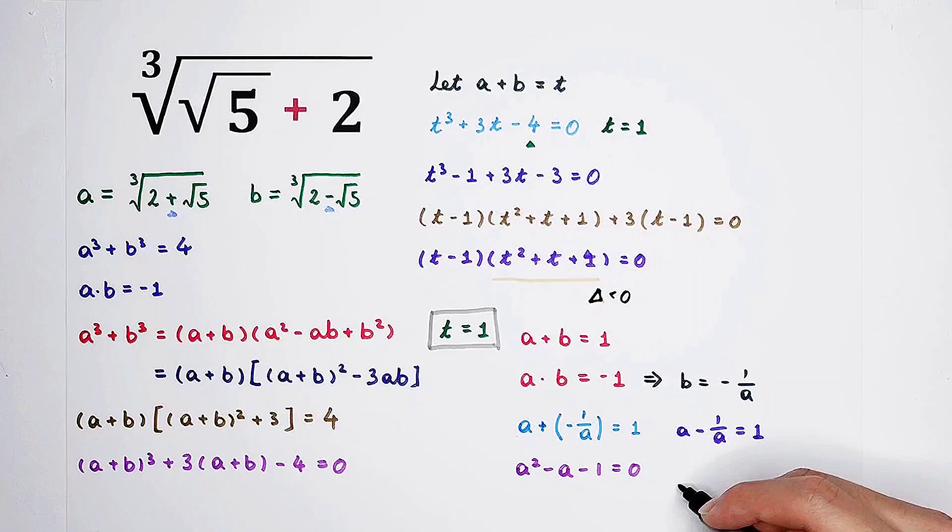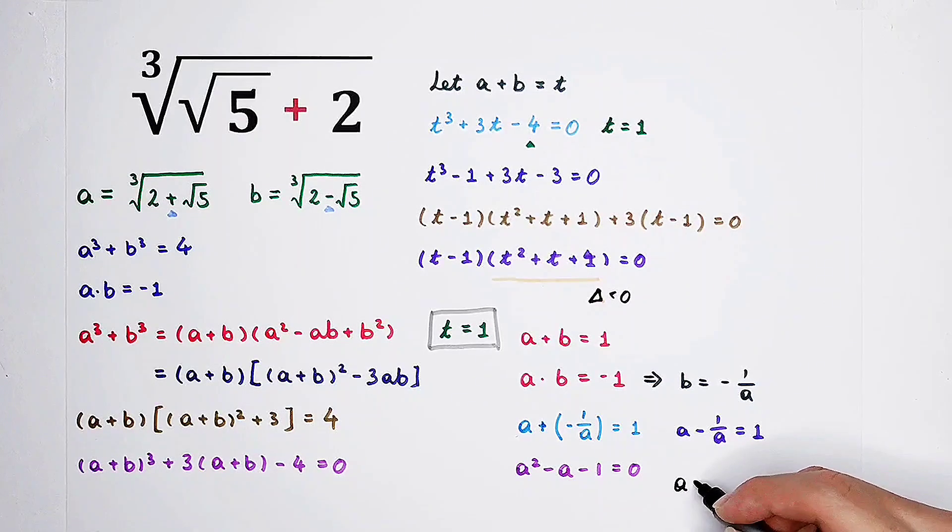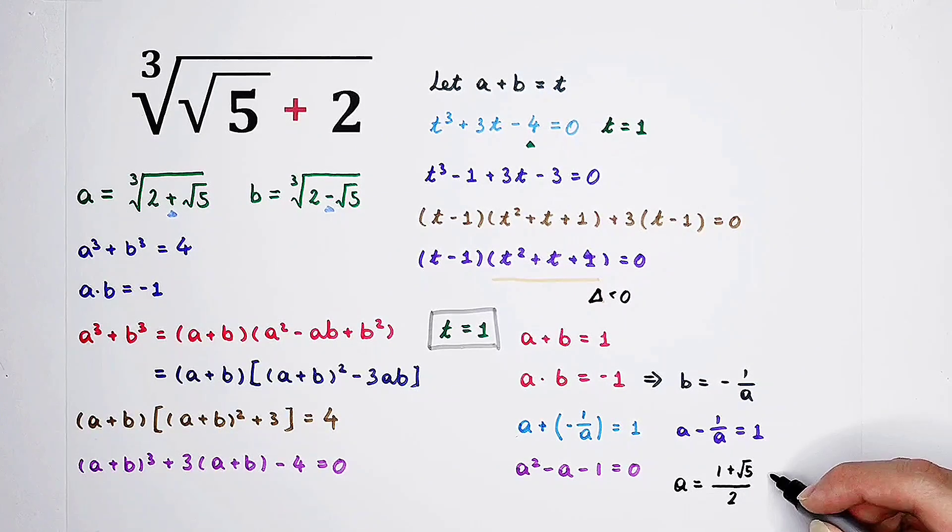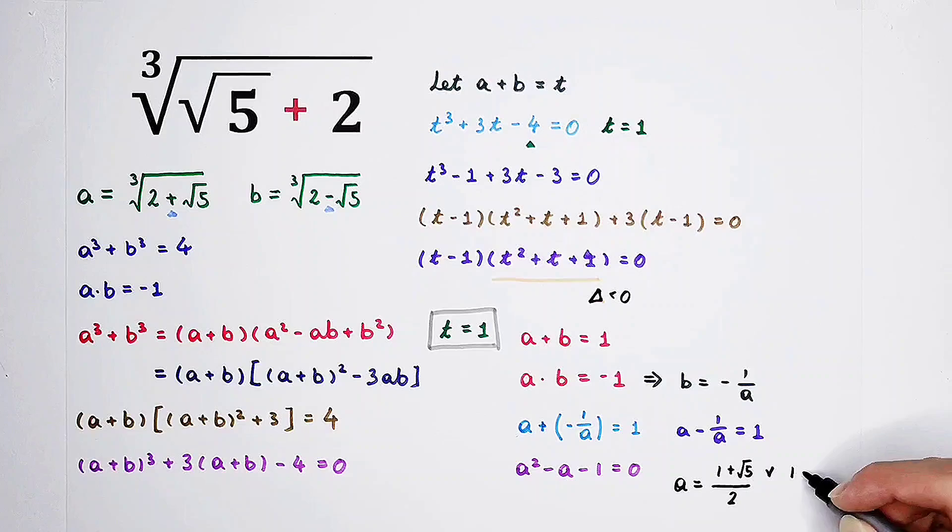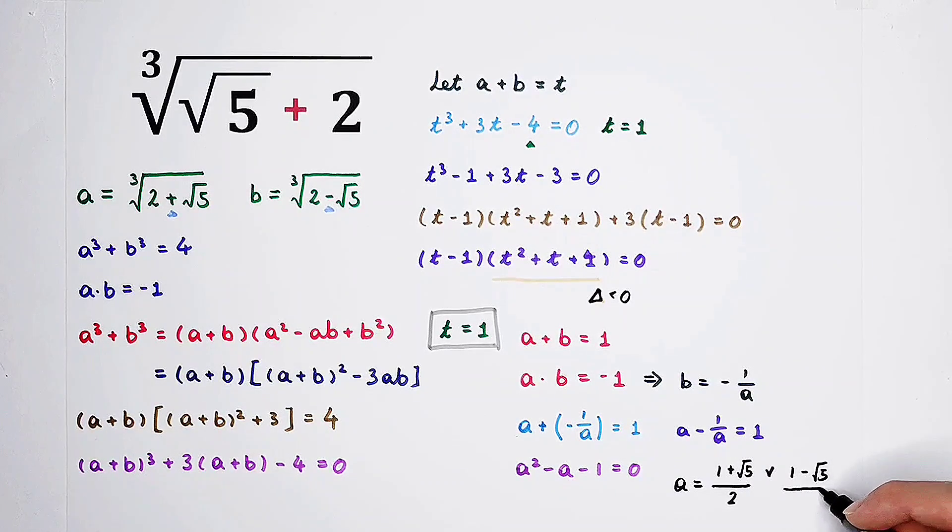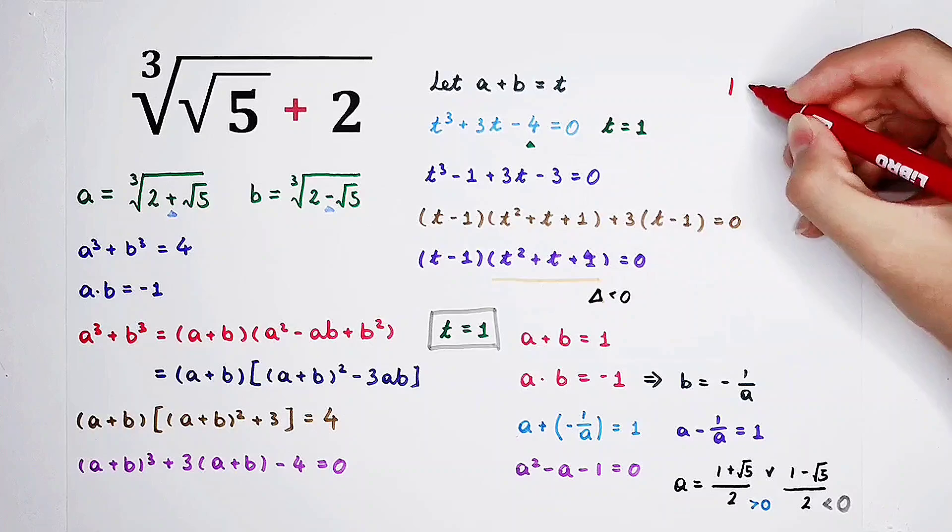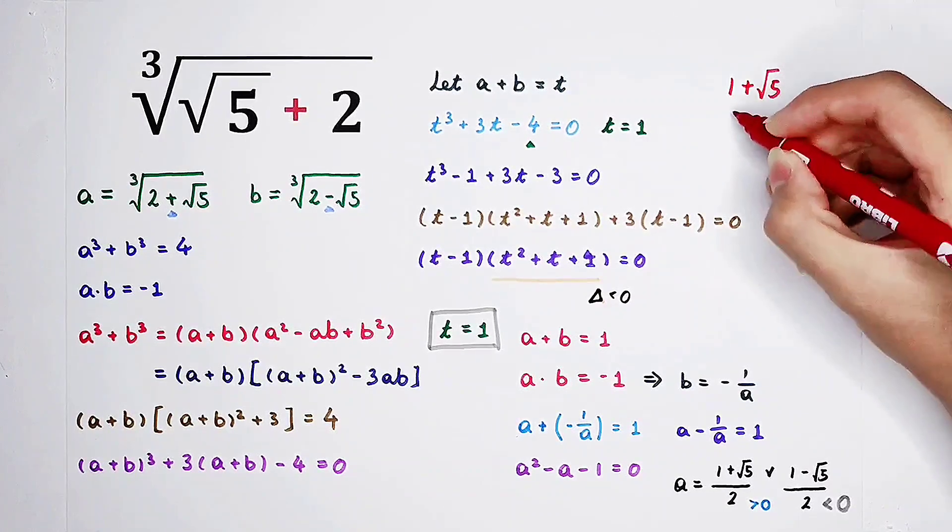This is actually a famous equation, isn't it? So a is equal to 1 plus square root of 5 over 2, or 1 minus square root of 5 over 2. This guy, 1 minus square root of 5 divided by 2, it is smaller than 0. So please desert it. We only have to choose the value which is bigger than 0. Of course, the first one: 1 plus square root of 5 over 2. We got the answer. It is 1 plus square root of 5 over 2.